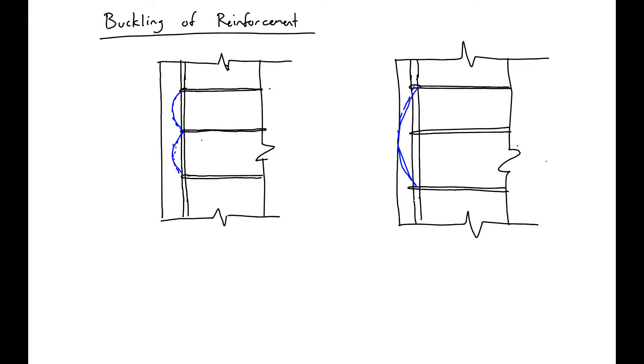This is dependent on the stiffness that can be provided from the ties and the spacing that they're at. So we'll have some spacing, S, and also some area, which we'll call A-sub-tr.